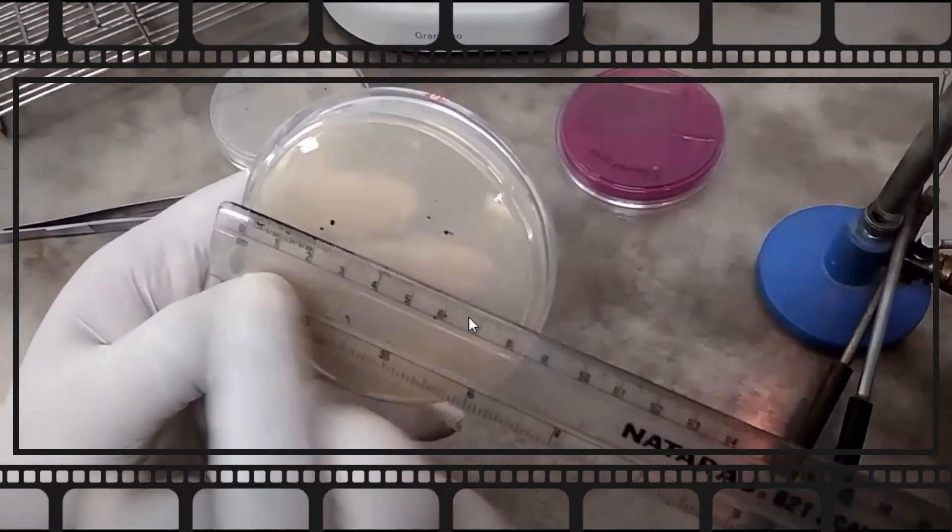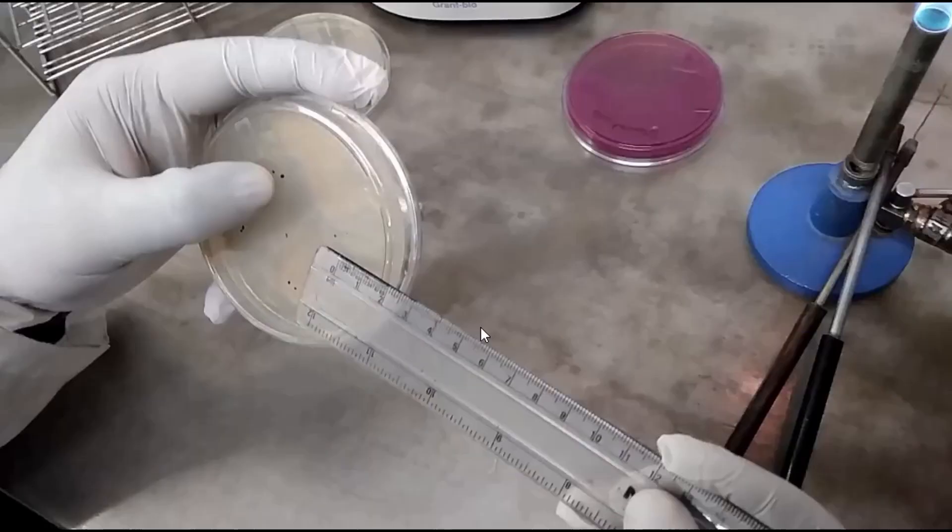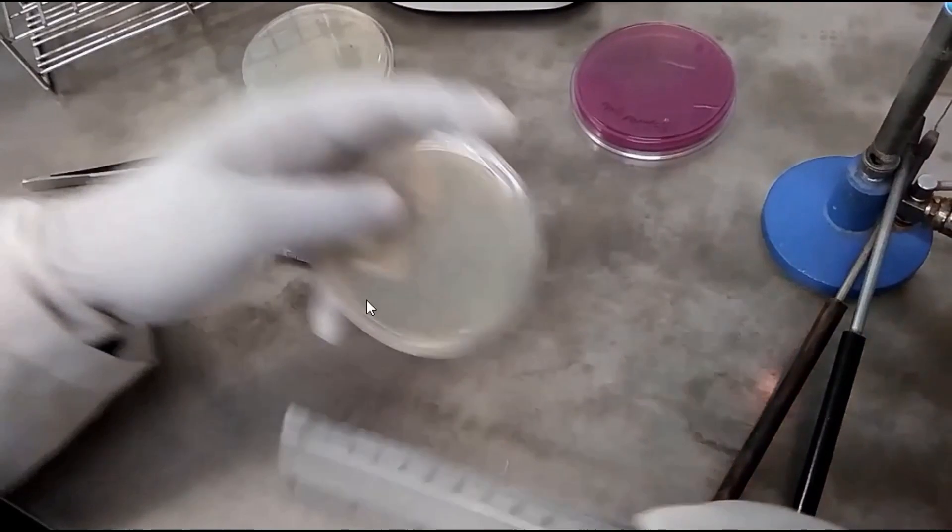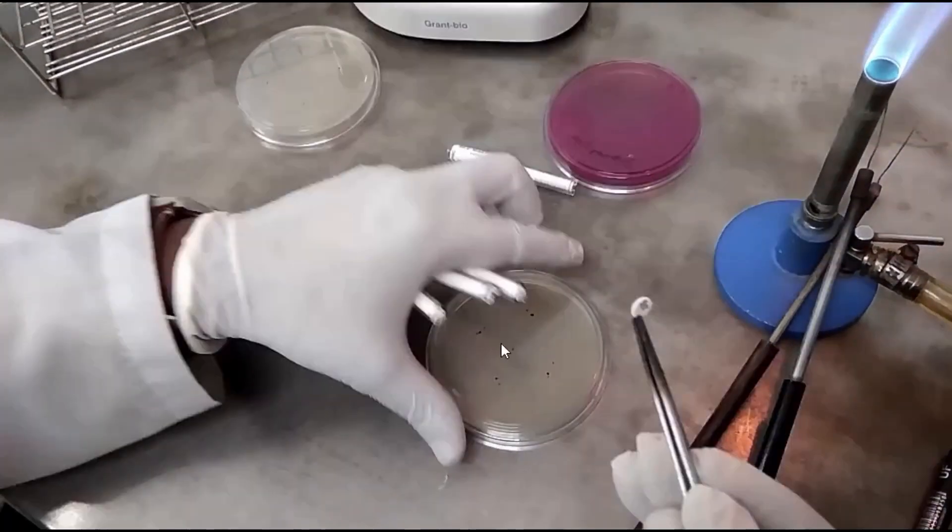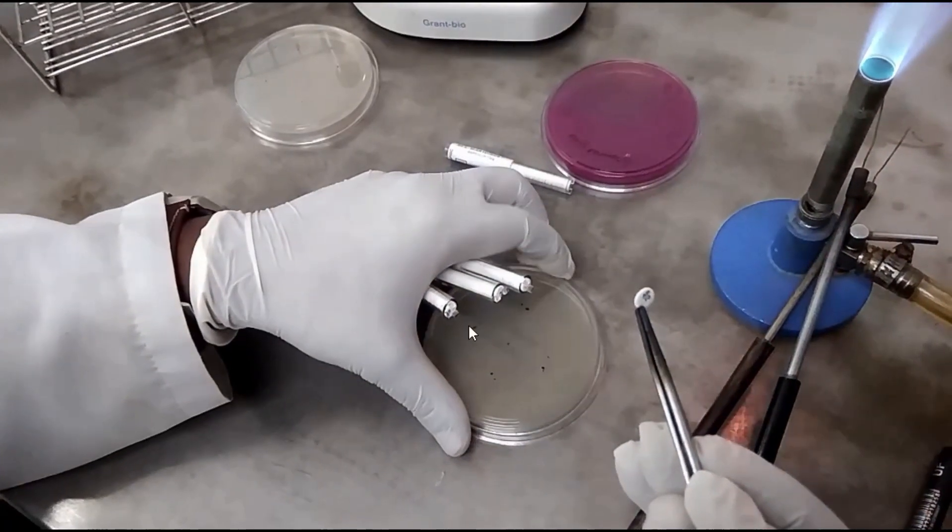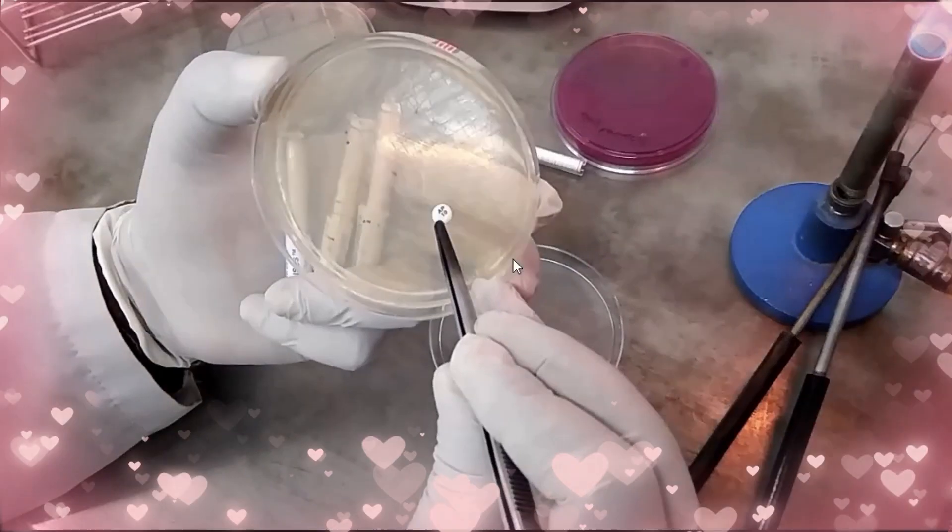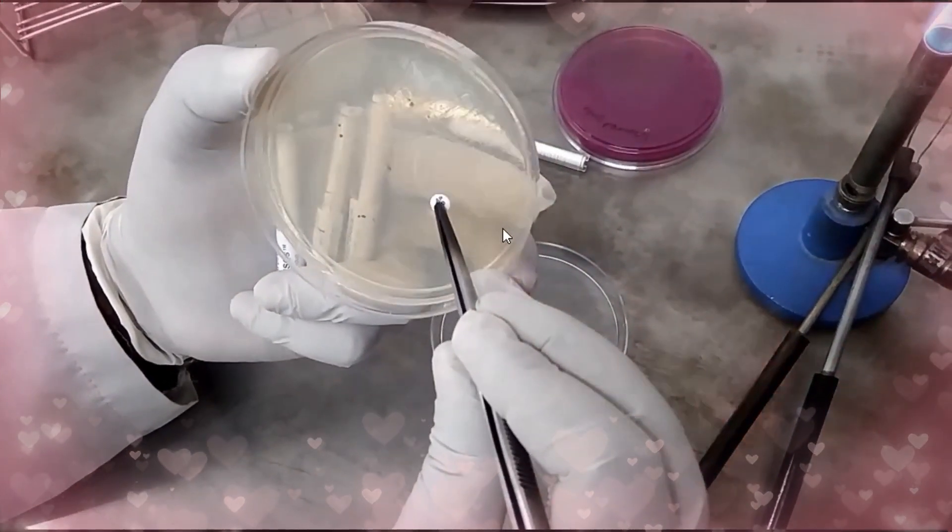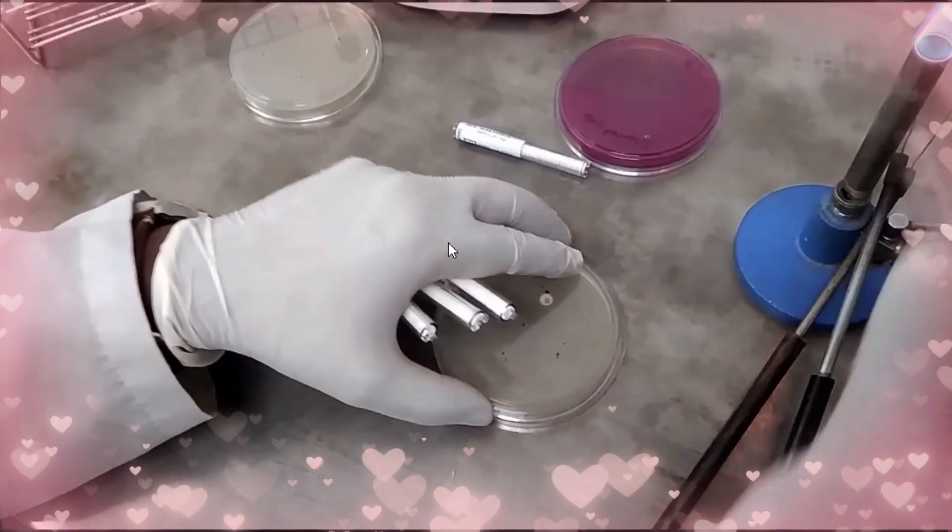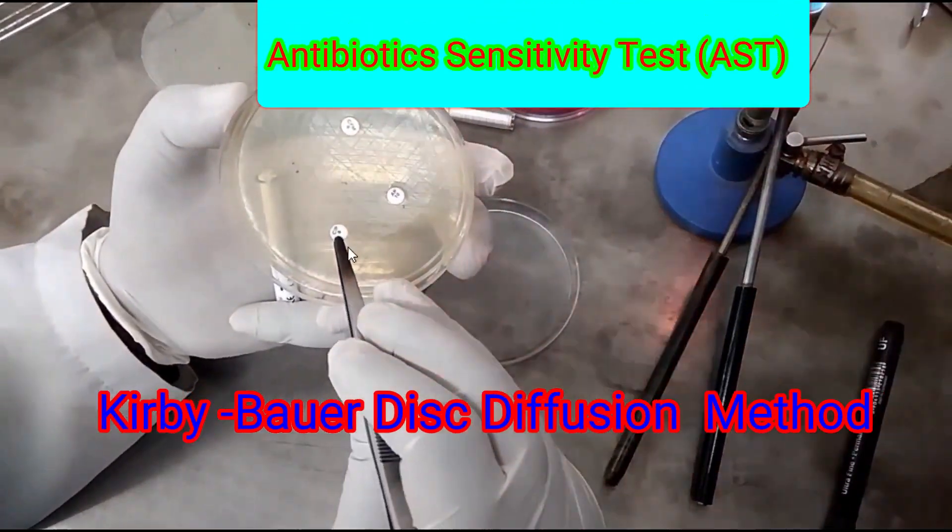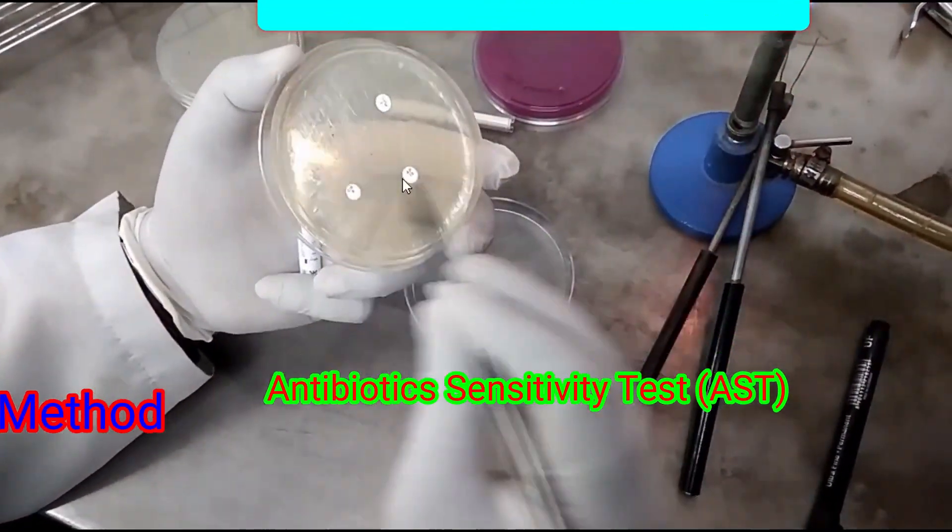So here you can see the diameter of this petri plate is only 80 mm. According to WHO, the depth of Mueller-Hinton agar should be 4 mm. The diameter of disc is 6 mm.